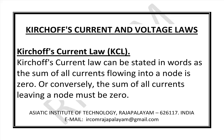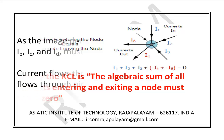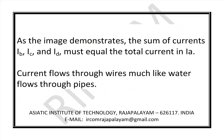Or conversely, the sum of all currents leaving a node must be zero. Simply, Kirchhoff's current law says that the algebraic sum of all currents entering and exiting a node must be equal to zero. As the image demonstrates, the sum of currents IB, IC, and ID must equal the total current IA.